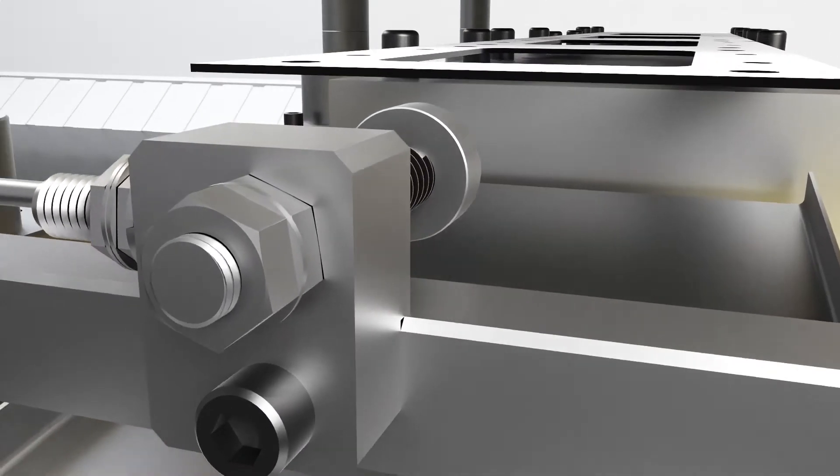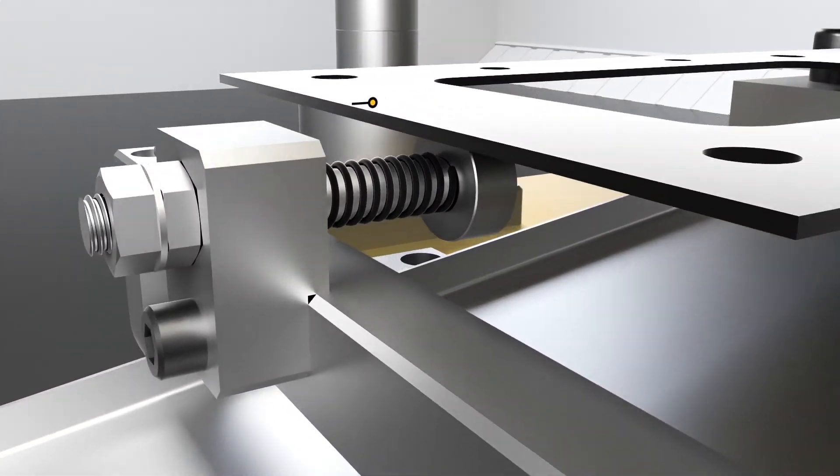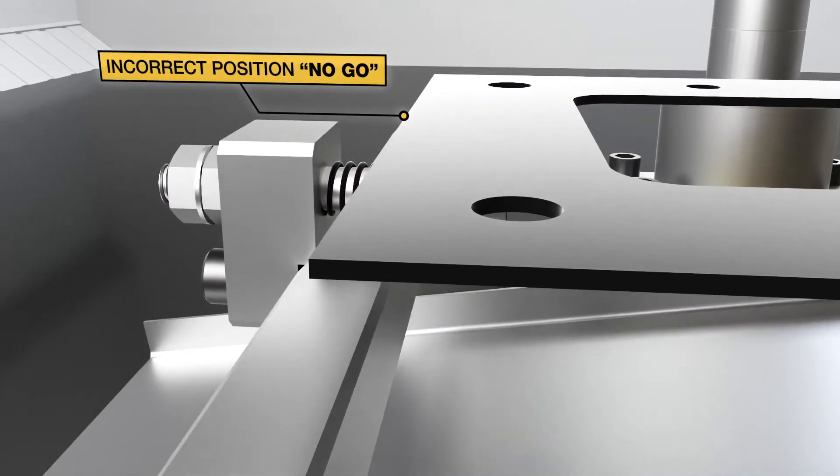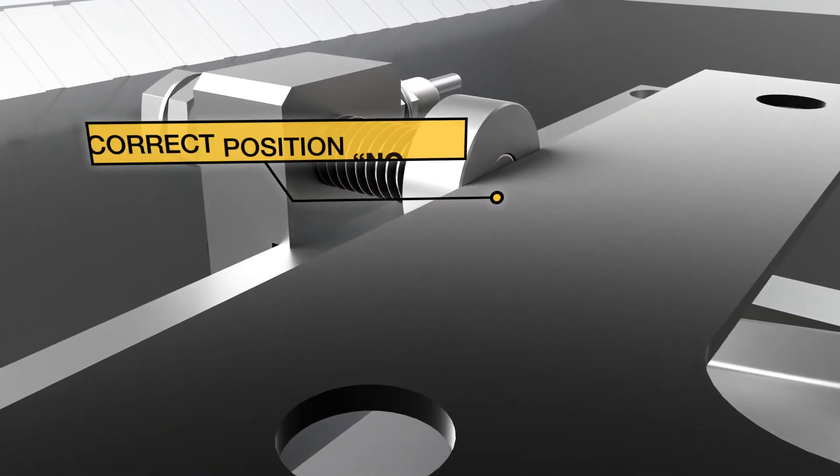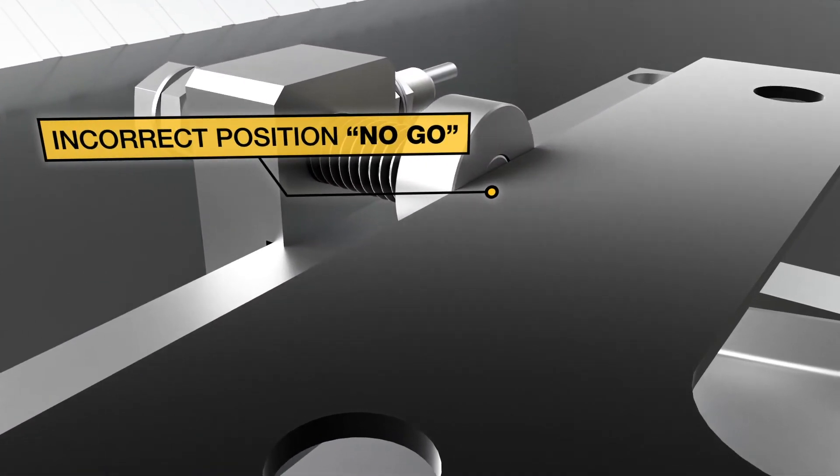If the workpiece pushes the shaft too far or is long fed, the sensor does not give the go to the press. The same goes for when the workpiece is short fed. No signal is provided to the press.